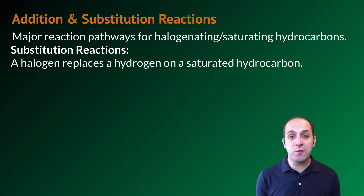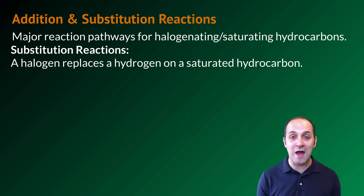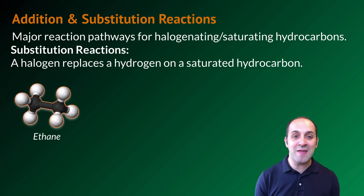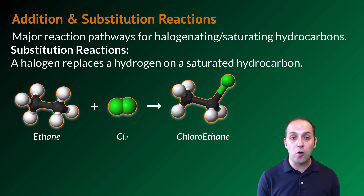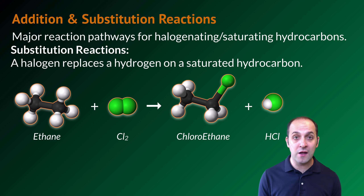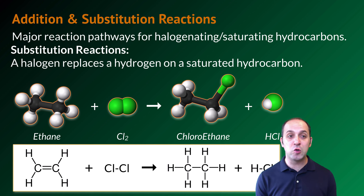In a substitution reaction, we're going to take a halogen and replace a hydrogen on a saturated hydrocarbon. So an alkane is going to be a reactant in the reaction, not a product. Here's an example substitution reaction: starting with ethane, we're going to add a molecule of chlorine gas to it, and this is going to produce chloroethane as well as a molecule of hydrogen chloride. Here's what this reaction looks like written out, and you can see a couple of differences between the addition and the substitution reactions.